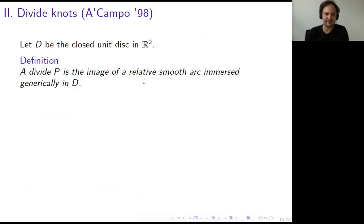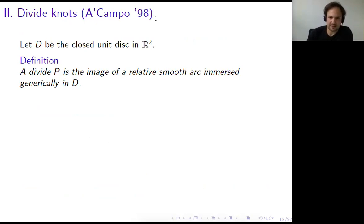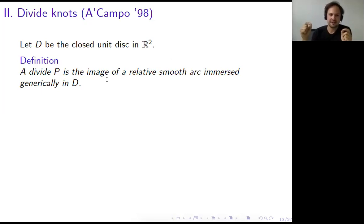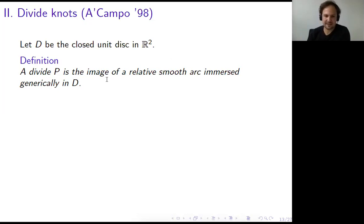Let's go to the second part of the talk: divide knots, introduced by A'Campo in 1998. Let D be the closed unit disc in the plane. A divide P (from the French 'partage') is the image of a smooth arc immersed in the disc with endpoints on the boundary. This immersion is assumed to be generic: all self-intersections are double points where the tangent directions are distinct.